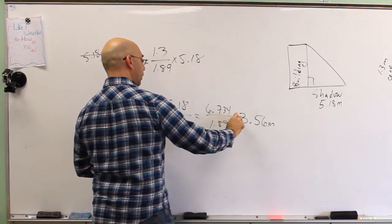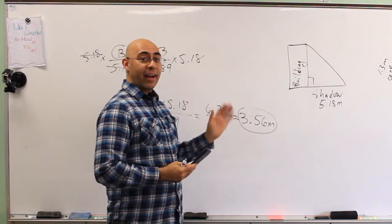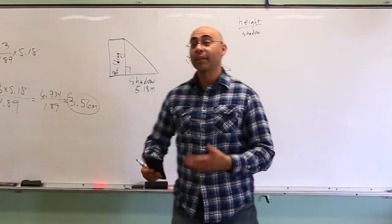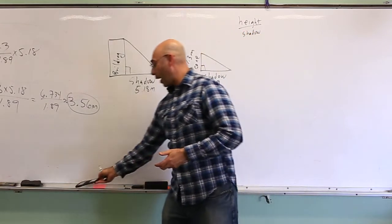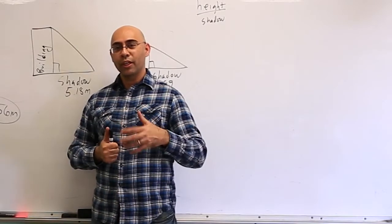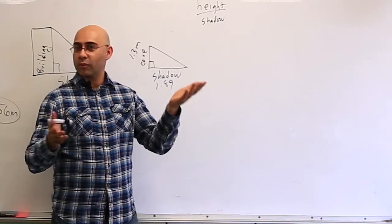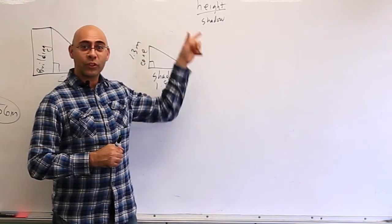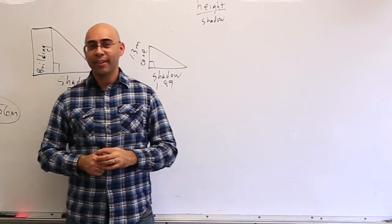So approximately 3.56 meters — meaning this building is about three and a half meters tall. Which seems to make sense: it was about twice my height, and I'm about 1.75 meters, so that's about right. I would say we're pretty consistent and accurate in our work. I hope you enjoyed this video. I'm going to attach a problem on the Google Docs page when you click on that. I hope you found this very valuable. Always keep mathing!